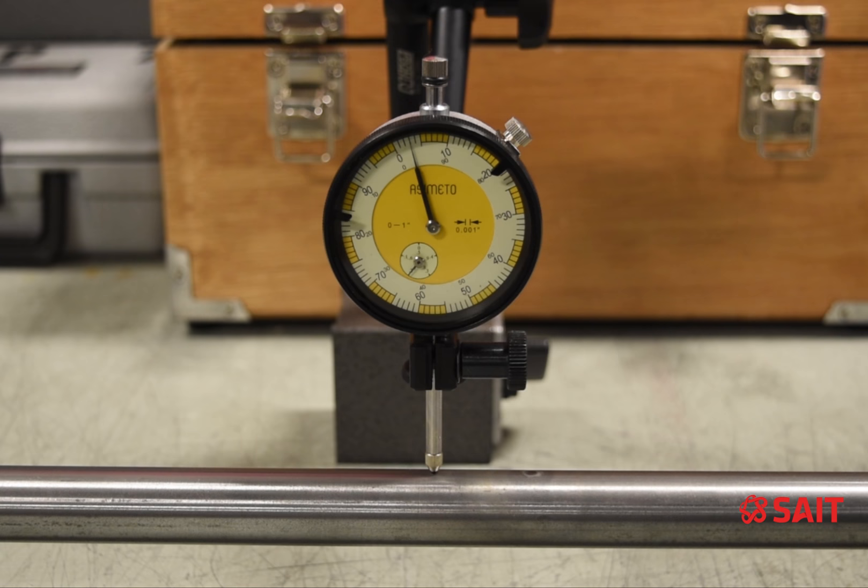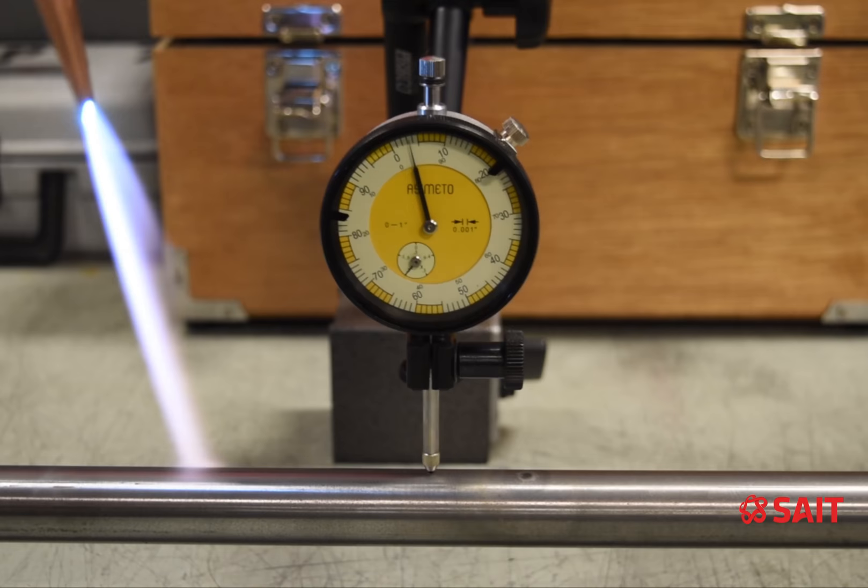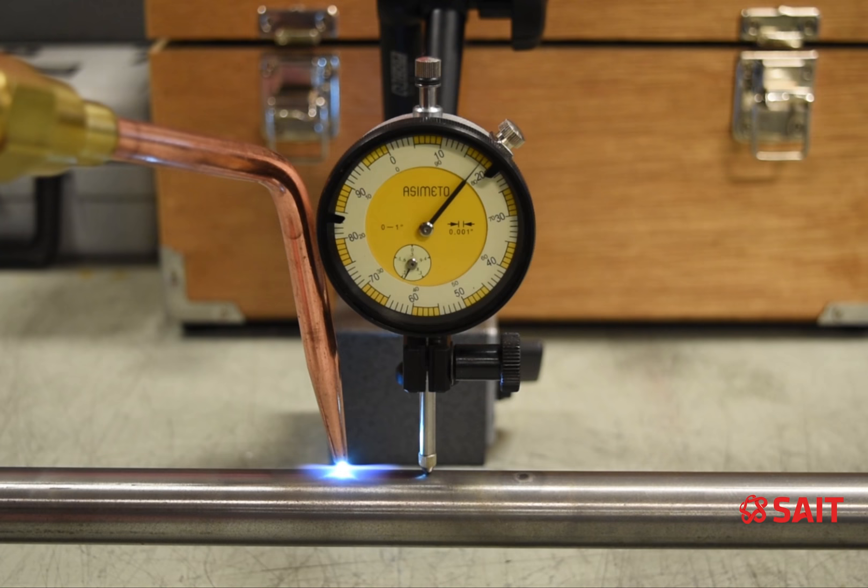As you can see, as we rotate the shaft, the dial isn't showing much change in our deflection. We may need to heat the shaft a couple more times on either side of the dial to achieve the straightness we are looking for.